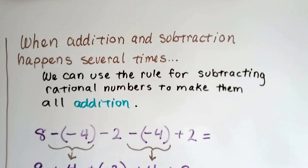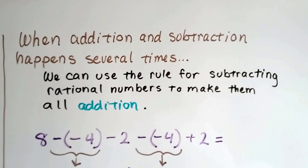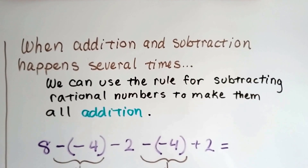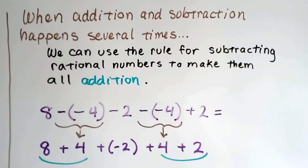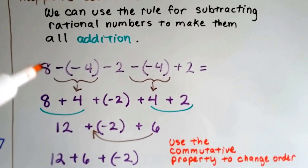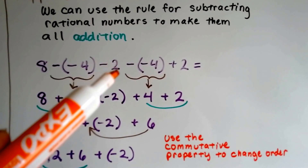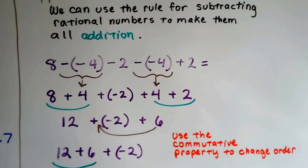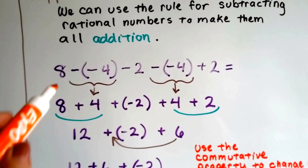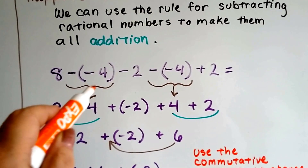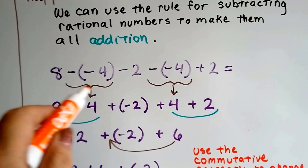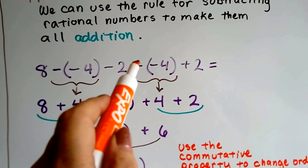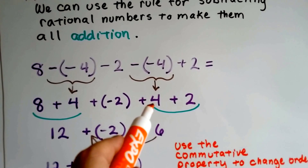When addition and subtraction happen several times, that can be confusing. We can use the rule for subtracting rational numbers to make them all addition — we add the opposite. So if we have 8 take away a negative 4 minus 2 minus a negative 4 plus 2, we can group the inverse of an inverse pairs, which gives us a positive 4 each time because of the double negatives.